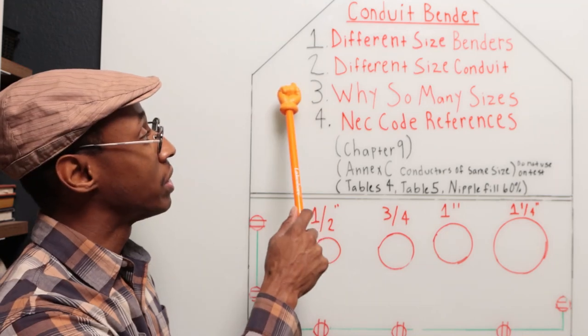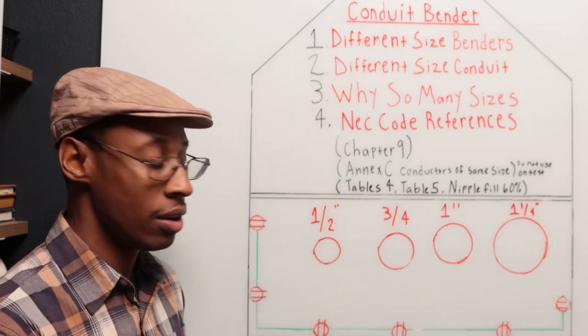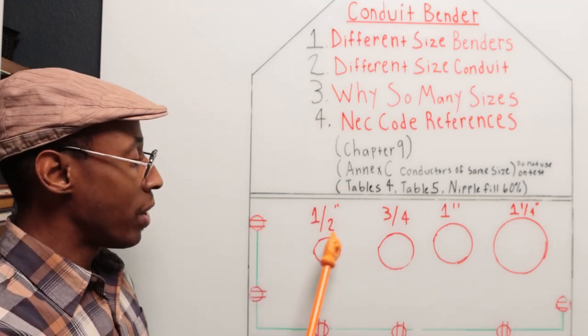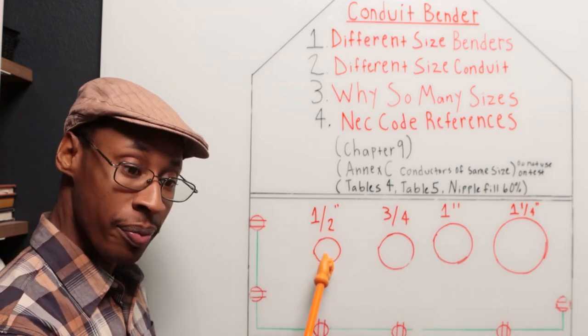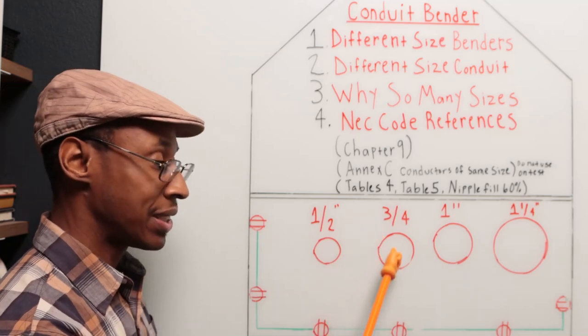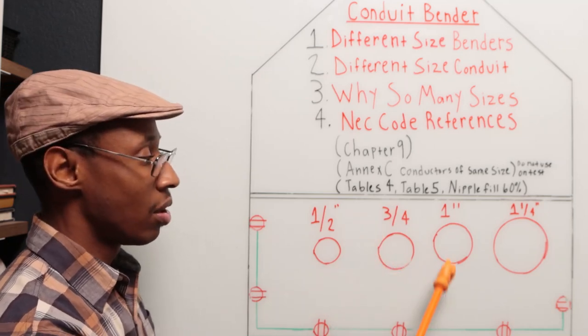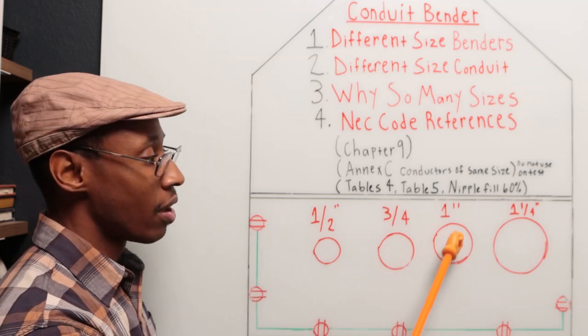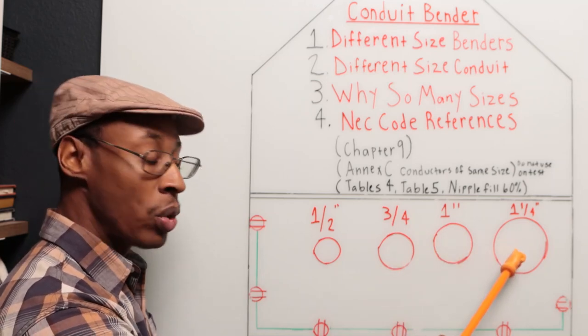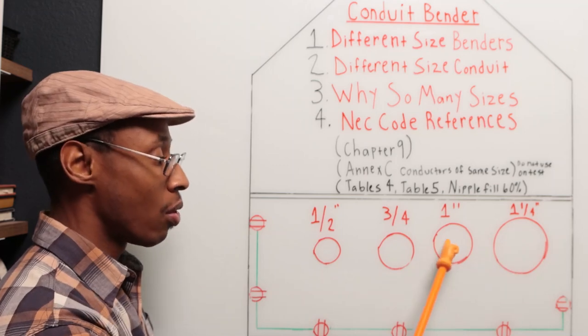Let's go on to number two, which is different sizes of conduit. So we have half inch conduit, which is the smallest one, three quarter, which is the next size up from half inch, one inch conduit, which is the next size up from three quarter, inch and a quarter, which is the next size up from one inch.